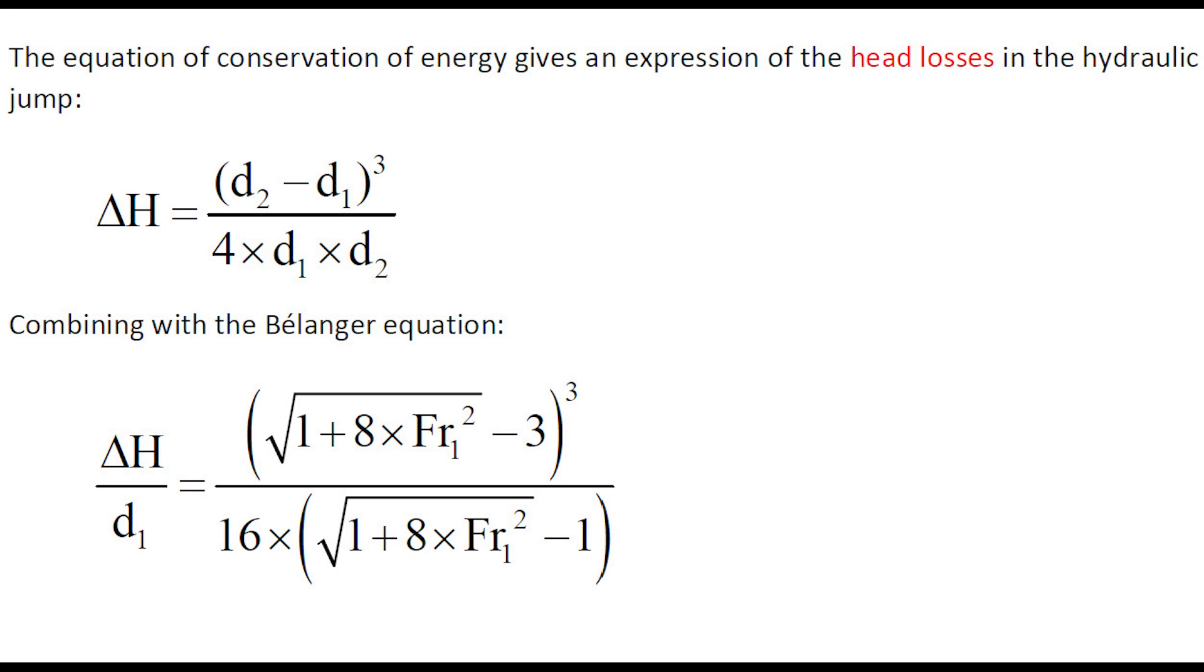We can then apply the equation of conservation of energy, which gives an expression of the head loss in the hydraulic jump, delta H equals (d2 minus d1) cubed over 4 d1 d2. On combining with the Bélanger equation, we can obtain a dimensionless head loss, delta H over d1.